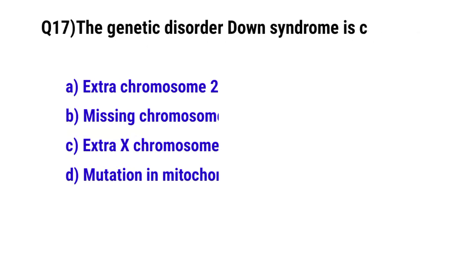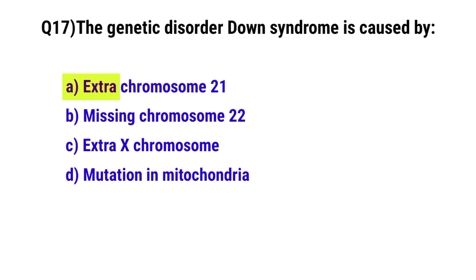Question No. 17: The genetic disorder Down syndrome is caused by? The correct option is A: Extra chromosome 21.